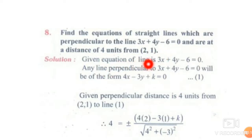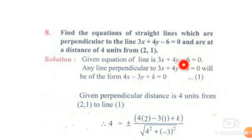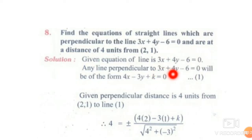So, the given equation of the line is 3x plus 4y minus 5 equal to 0. Now, this is perpendicular to the line. Any line perpendicular to 3x plus 4y minus 5 equal to 0 will be of the form: